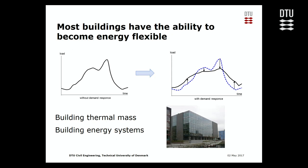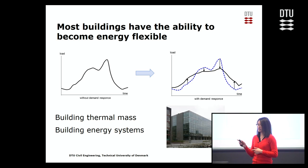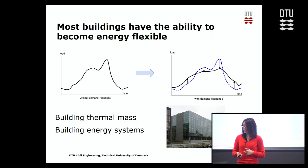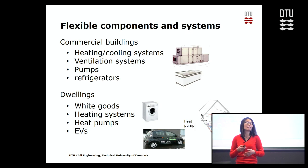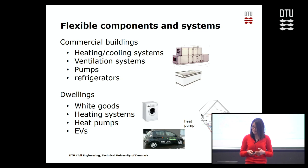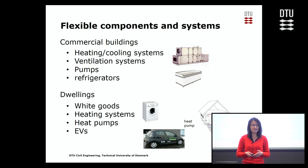The good news is most buildings have the ability to become energy flexible. This is an example of a building tested by DTI. The graph on the left shows the energy demand of a day. By using a demand response program, the energy demand can be changed into a more flat pattern, using building thermal mass and building energy systems. In commercial buildings, heating, cooling systems, ventilation, pumps, and refrigerators have potential to become energy flexible. For example, you can adjust the temperature setting and adjust the flow rate to change the energy consumption of those systems.